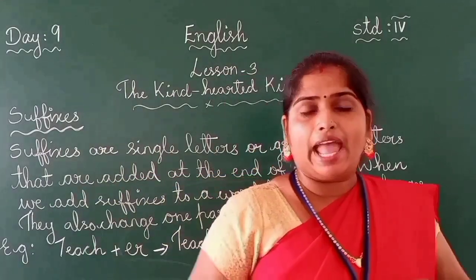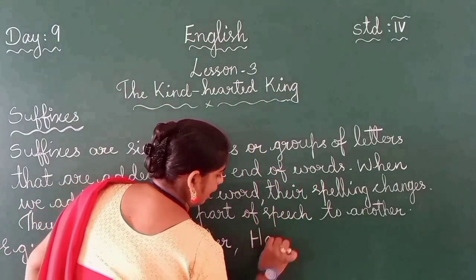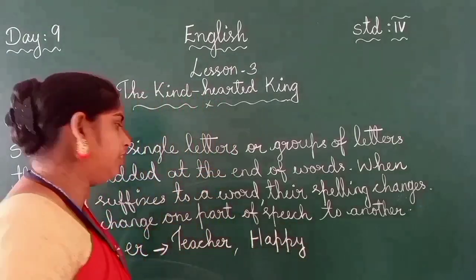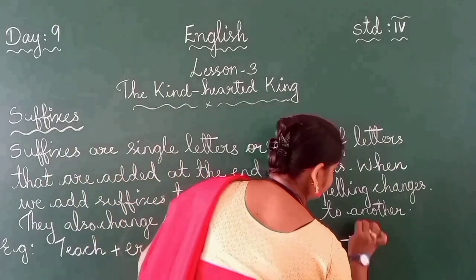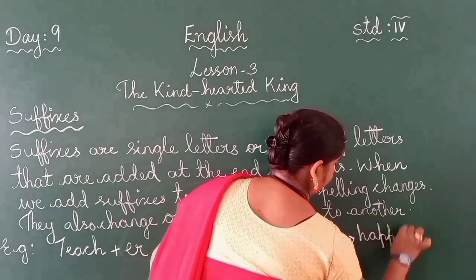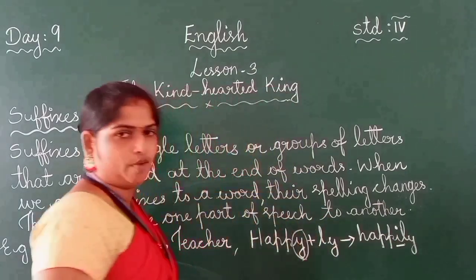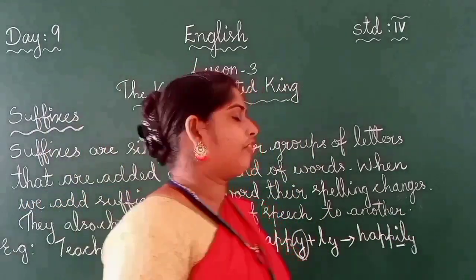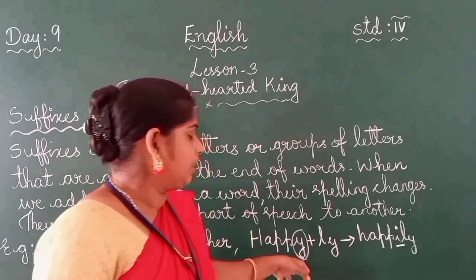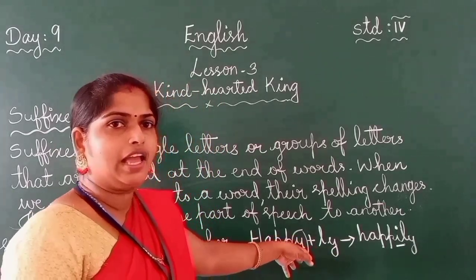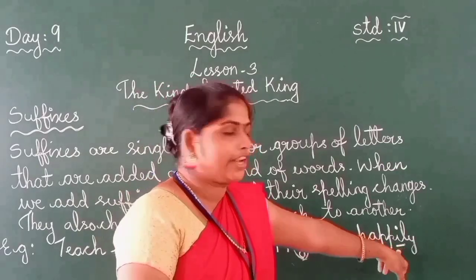If we add the suffix -ly to an adjective, for example: here plus the suffix -ly, we get clearly. Now, if a word ends with the letter -y and we add a suffix, the -y changes to -i.